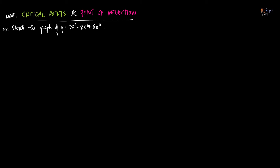Let's start with the critical points. To find the critical points, if there are any, the first step is to find y prime. y prime is equal to 12x cubed minus 24x squared plus 12x. And then the next step is to equate y prime to 0. So we have 0 equals 12x cubed minus 24x squared plus 12x, and we have to solve for x.